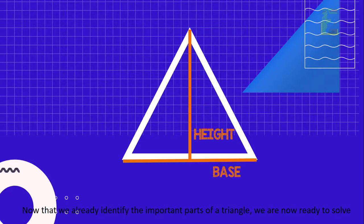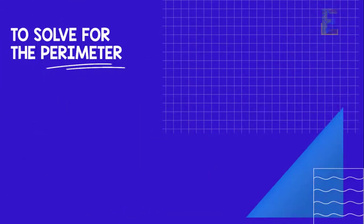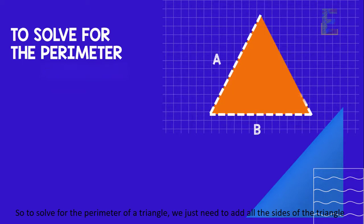Now that we already identified the important parts of a triangle, we are now ready to solve for the perimeter and area of a triangle. So to solve for the perimeter, we just need to add all the sides of the triangle.